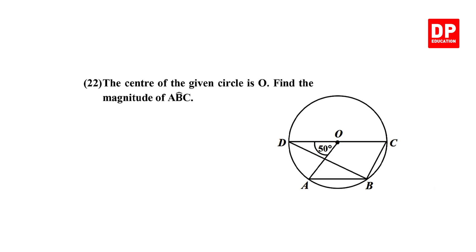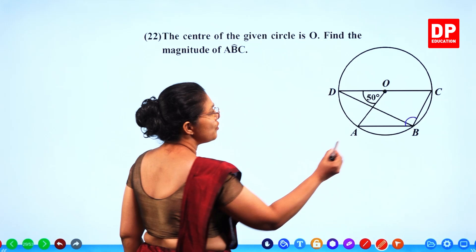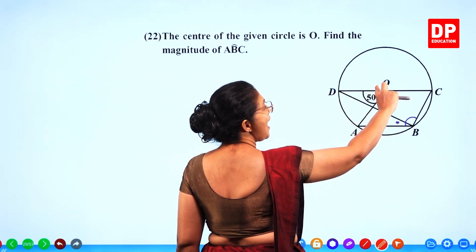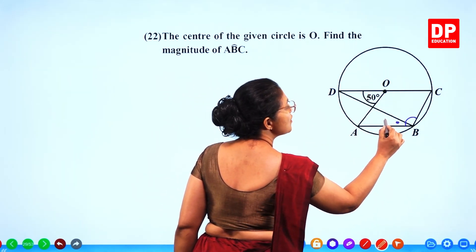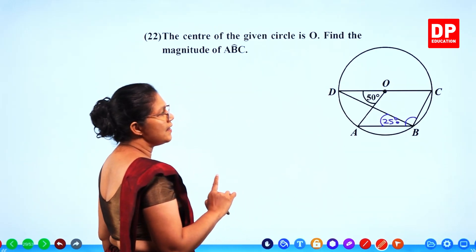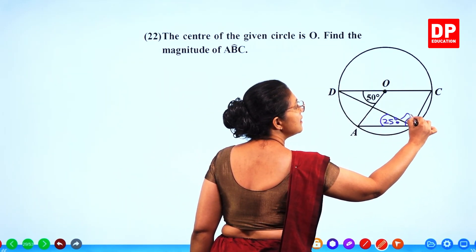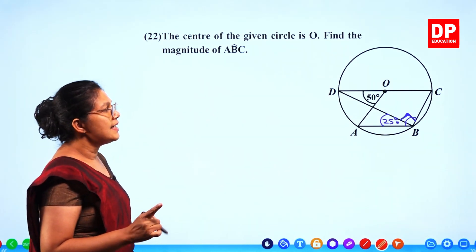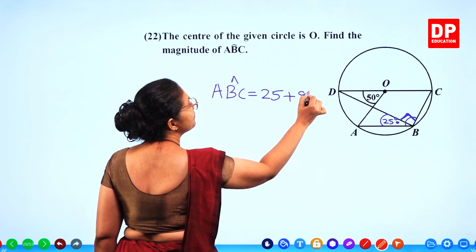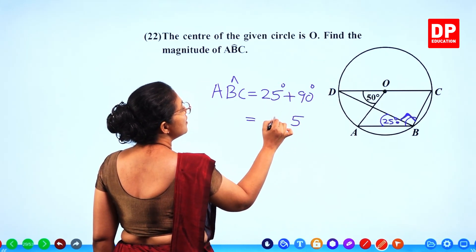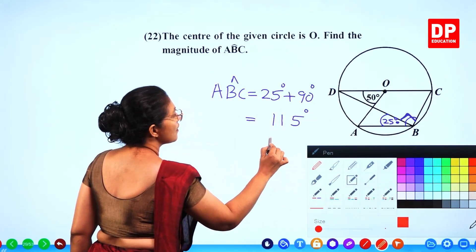Question number 22: the centre of the given circle is O. Find the magnitude of angle ABC. Angle ABD is the angle subtended on the circumference, which is half the angle at the centre: half of 50 is 25 degrees. CD is the diameter, so the angle in the semicircle is 90 degrees. Therefore angle ABC equals 25 plus 90 equals 115 degrees. Two marks.